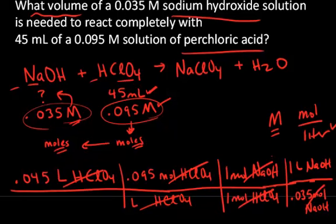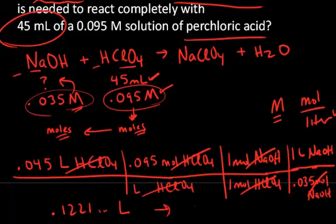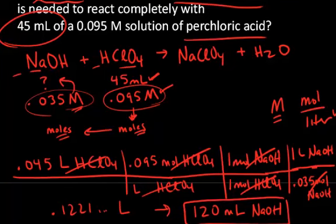If I plug all of those numbers into my calculator, 0.045 times 0.095 divided by 0.035, I get the number 0.1221, etc., and the volume is in liters. But I want to express that in milliliters since that's how we started, and we have two significant figures. So the correct answer here to two significant figures is 120 milliliters of the sodium hydroxide solution needed to neutralize that amount of perchloric acid.